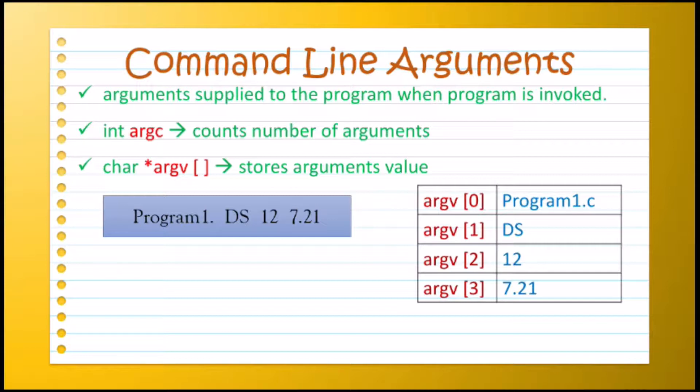And argument ARGC is used to count the number of arguments supplied through command line. So ARGC will hold the value 4, and we have supplied 4 arguments.